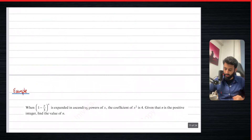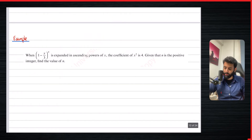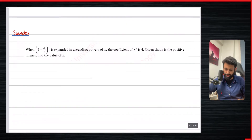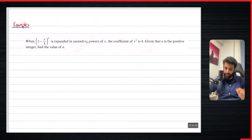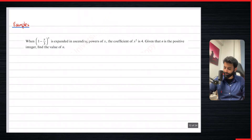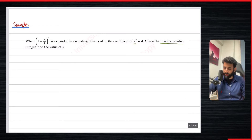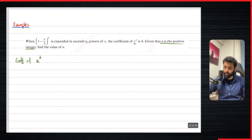There aren't a lot of past paper questions revolving around this concept, but here's a question from the book. The question says: when (1 − x/3) to the power N is expanded in ascending powers of x, the coefficient of x² is 4. Given that N is a positive integer, find the value of N. So what we're really interested in is the coefficient of x², and we pick the value r = 2, which gives us the coefficient of x².